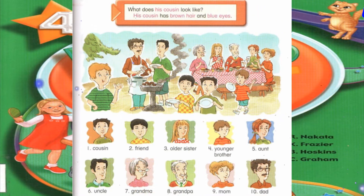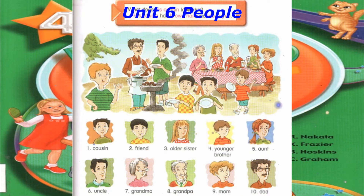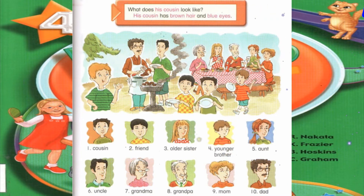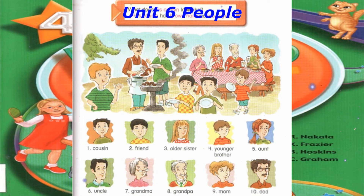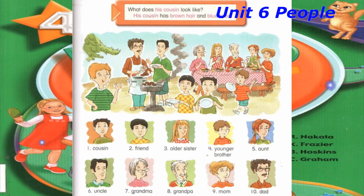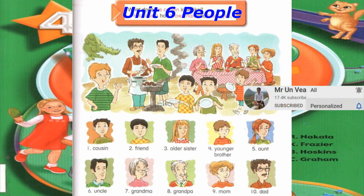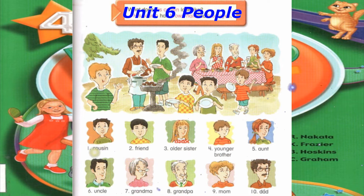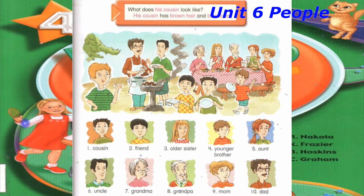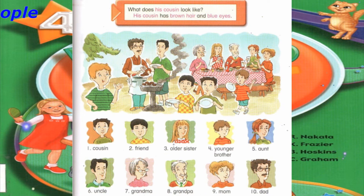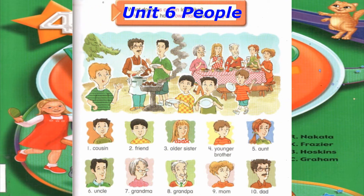Number 4: What does his younger brother look like? His younger brother has brown hair and brown eyes. Number 5: What does his aunt look like? His aunt has a ponytail and green eyes. Number 6: What does his uncle look like? His uncle has black hair and brown eyes. Number 7: What does his grandma look like? His grandma has short gray hair and blue eyes.